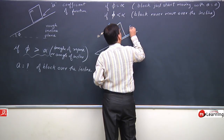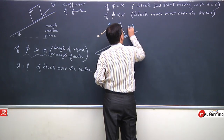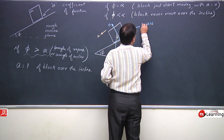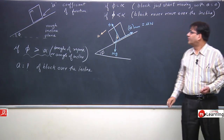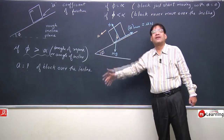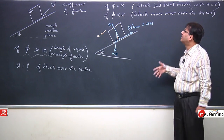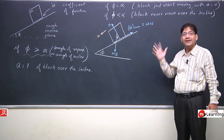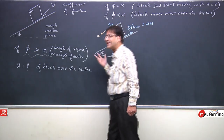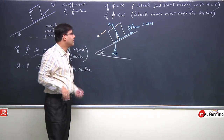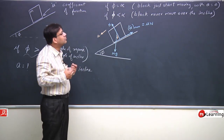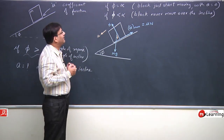Against this motion, the frictional force would be the maximum frictional force, equal to μ into N. Maximum kinetic friction will act since the block is moving. Kinetic friction equals μ into N, where μ is the coefficient of kinetic friction. This is the complete free body diagram; now I need to frame the equations.